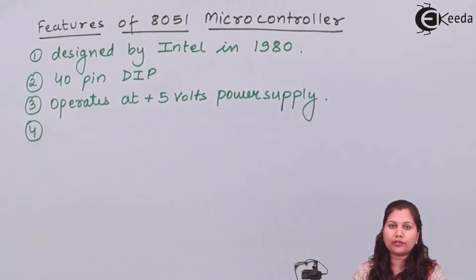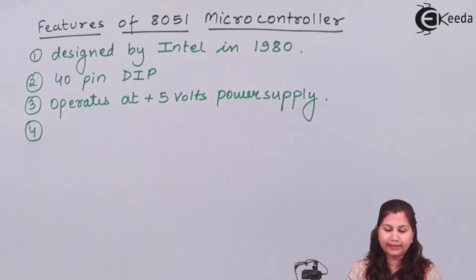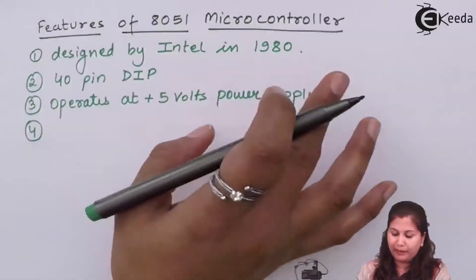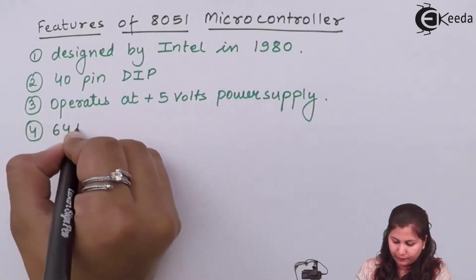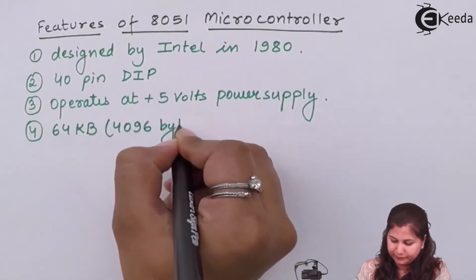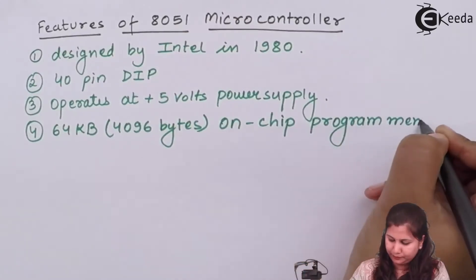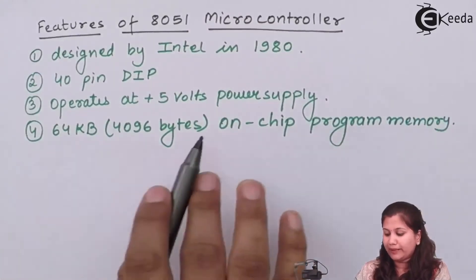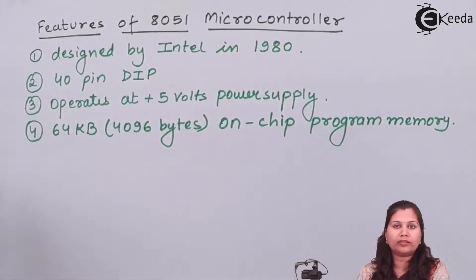In the case of microcontrollers, there are two types of memory: program memory and data memory. This 8051 microcontroller has 64 kilobytes of on-chip program memory, meaning this memory is available on the same chip on which the microcontroller is present.